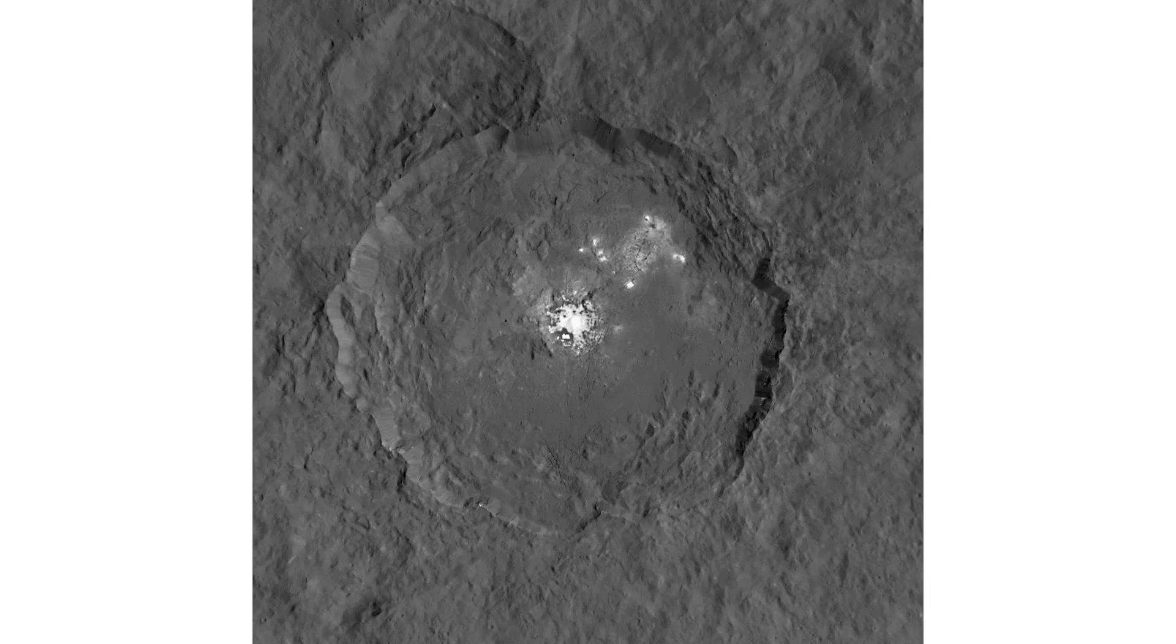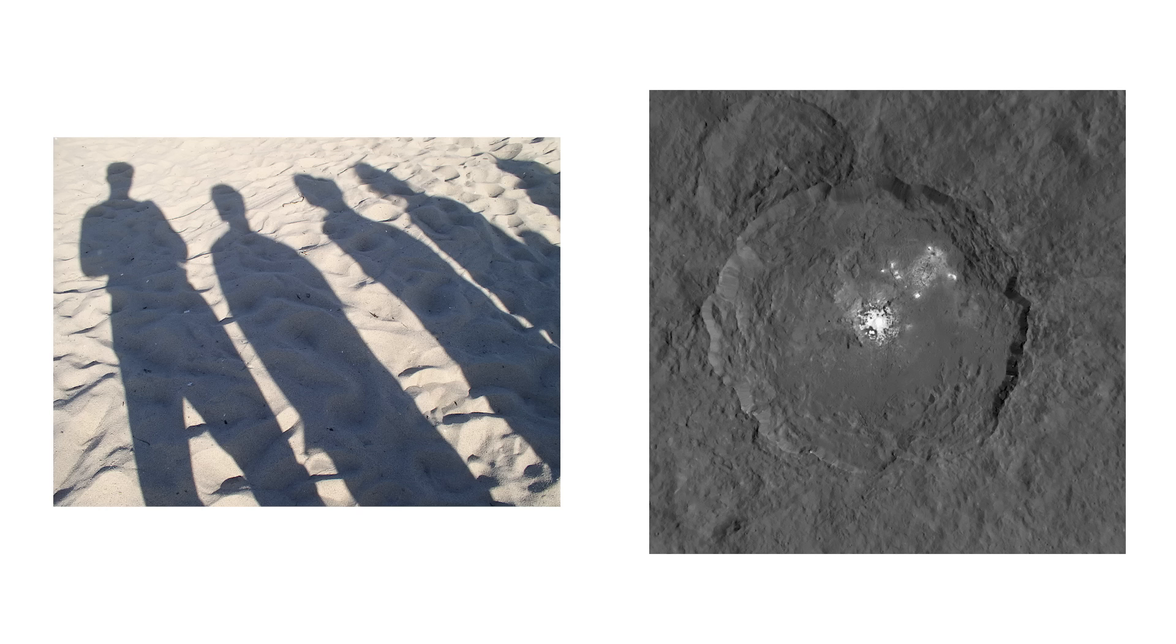Crater Illusion. This illusion causes craters or other holes to appear as mountains or domes. One of the most accepted theories is that it's caused by our being accustomed to seeing light from overhead.